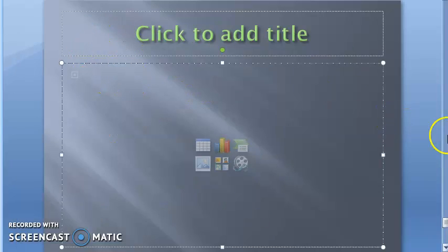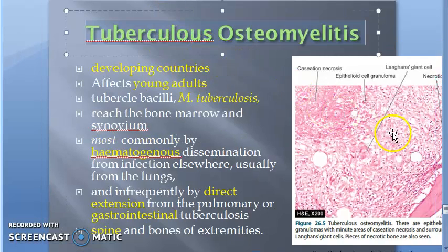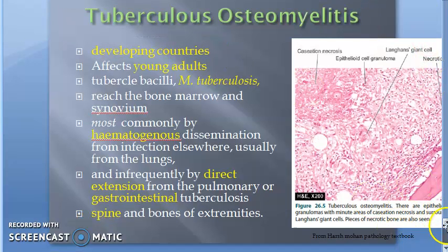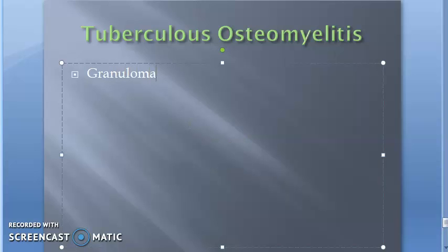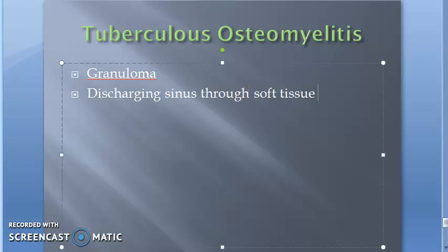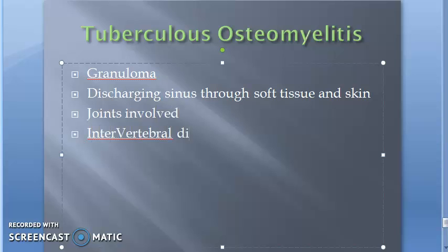These are the extra exam points to remember for tuberculosis osteomyelitis: explain granuloma in the microscopy, note the discharging sinus through soft tissue and skin, and remember that joints and intervertebral discs are involved.